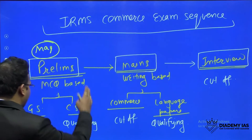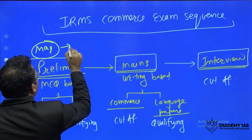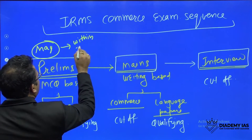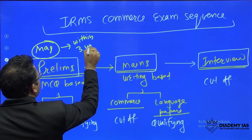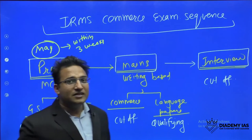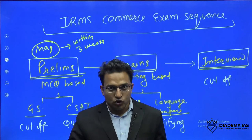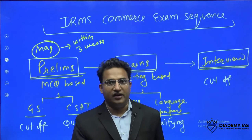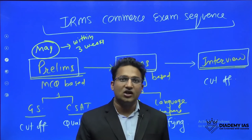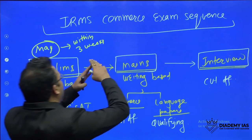After you qualify the prelims, the result will be out within three weeks. For example, in 2023 the prelims is scheduled to be held on 28th May 2023, so within 21 days — that is, maximum by 20th June — you will get the result of the prelims.